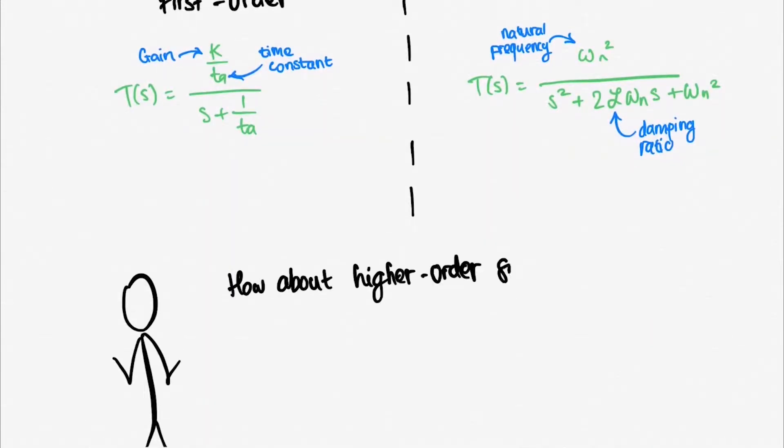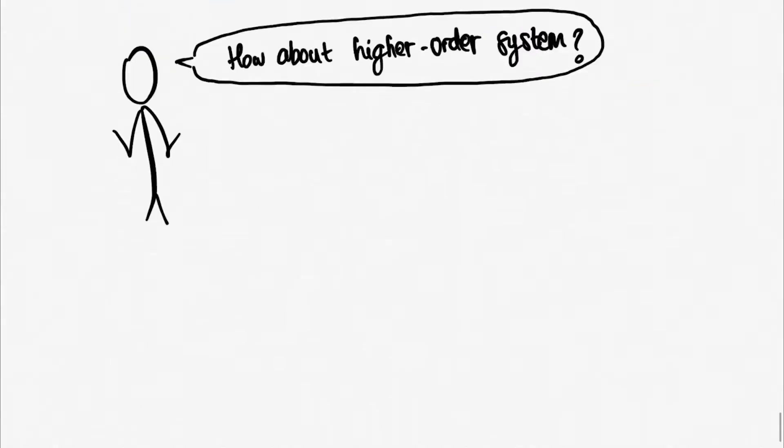How about higher order systems? Higher order systems will have more than two poles, but there will be only one or two dominant poles. This dominant pole are the ones who decide the system behavior. Meaning that the higher order system will generalize to first or second order system for analysis.